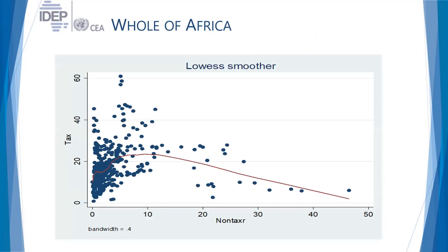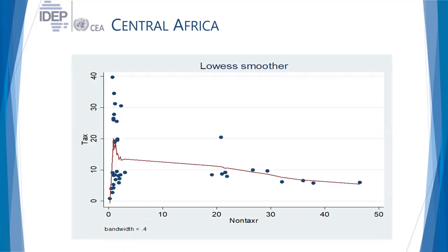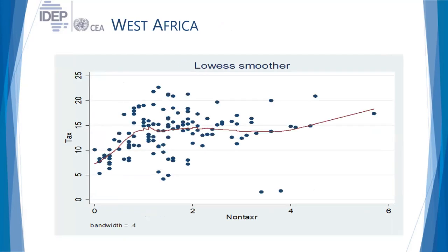For the whole of Africa, the relationship is broadly negative but non-linear. If you trace the red or maroon line summarizing the non-parametric regression, it is bell-shaped, indicating a non-linear relationship. For Central Africa, the relationship is again broadly negative but non-linear. West Africa shows a positive relationship, meaning when effort to collect taxes increases, effort to collect non-tax revenue also increases — which is encouraging evidence from those sub-regional countries over 37 years.